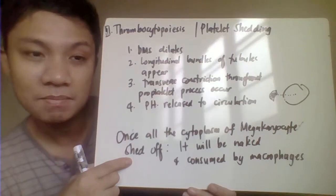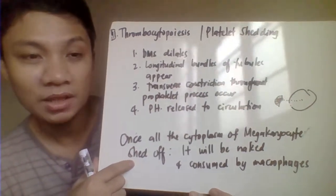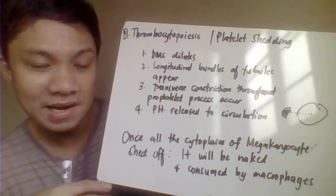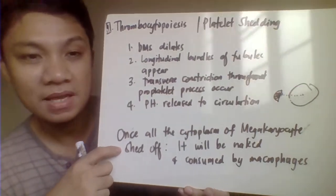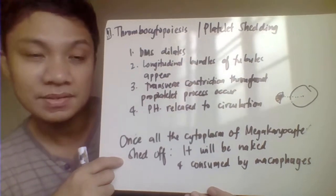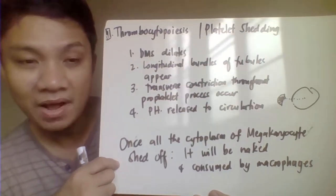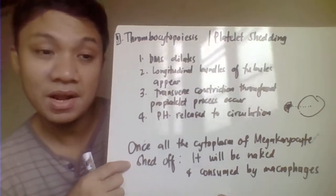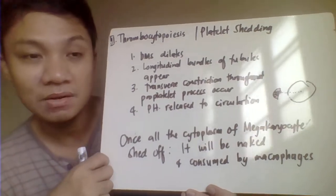So if all the cytoplasm of your megakaryocyte has been shed already, it would leave the megakaryocyte naked — because all of its cytoplasm is gone. And that's when the naked megakaryocyte is seen by the macrophages and will be consumed. Eventually it dies after having shed approximately 2,000 to 4,000 platelets.